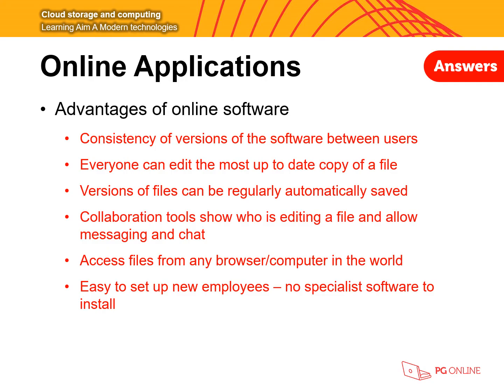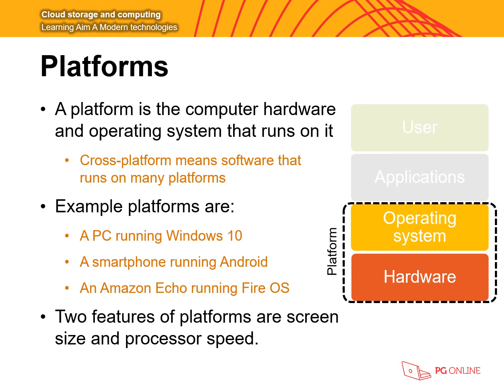Everyone can also edit the most up-to-date copy of a file. Because you are accessing it online, you will see version 6 and work on to version 7, whereas if files were stored on people's devices you might update a version and then find there is already a later version on someone else's device. Versions of files are regularly and automatically saved — in Google Docs you will notice it says the file has been saved every few moments automatically. Files are also automatically backed up so if your file is lost you can recover it online. You can access your files from different computers anywhere in the world with an internet connection, and it does not require any specialist software to install, making it cheaper and easier for staff to set up.